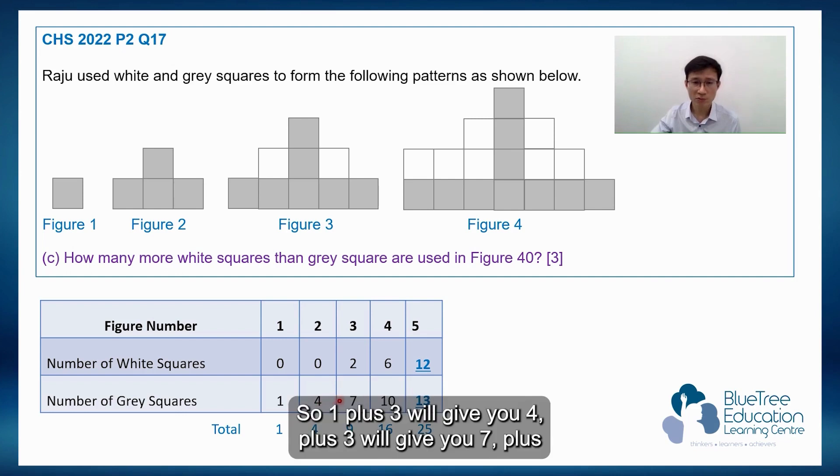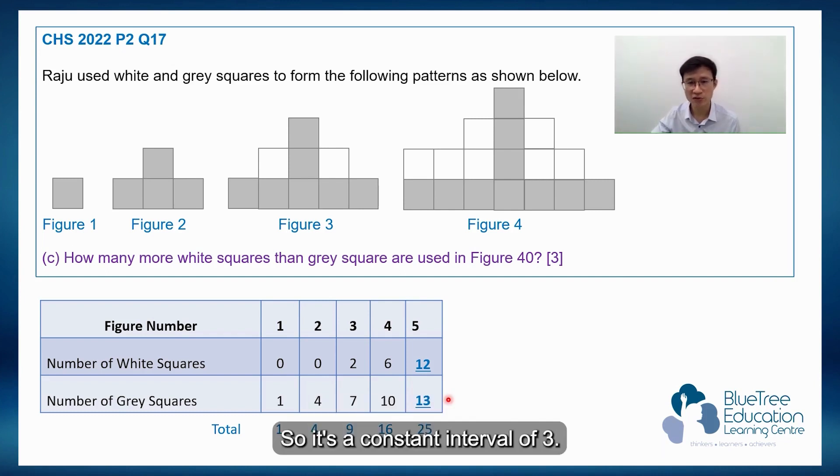So 1 plus 3 will give you 4, plus 3 will give you 7, plus 3 gives me 10, plus 3 gives me 13. So it's a constant interval of 3.